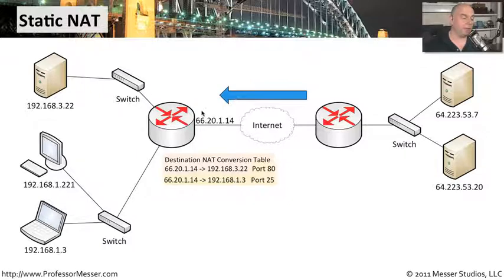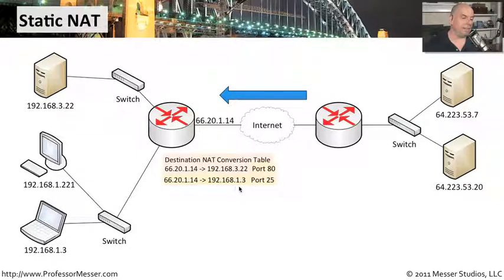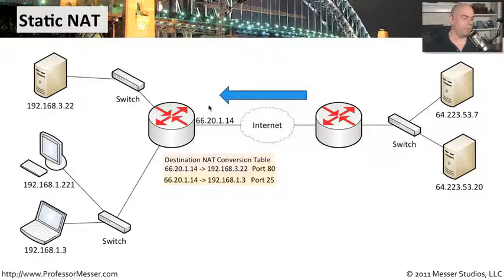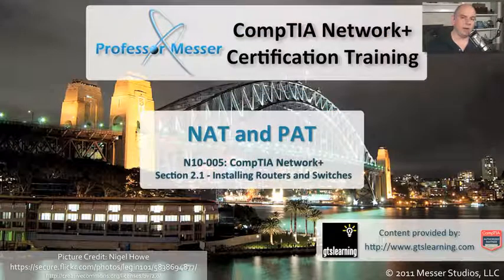If inbound traffic is going to that same IP address but on a different port number, we can configure another NAT rule that says statically, take anything inbound on port 25 and send it to our email server at 192.168.1.3. So even though people are communicating to a single IP address, the static NAT or destination NAT functionality lets us pick out individual port numbers and send traffic to the appropriate server for that service. That way we can keep our web server and email server inside our firewall, and simply facilitate those communications by setting up NATs on our external device.